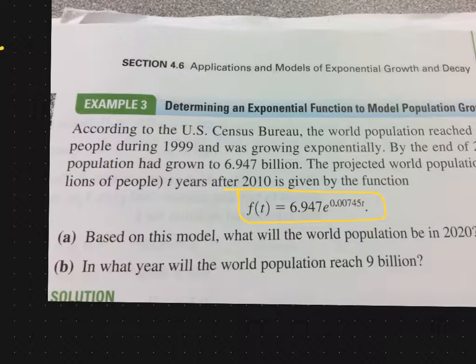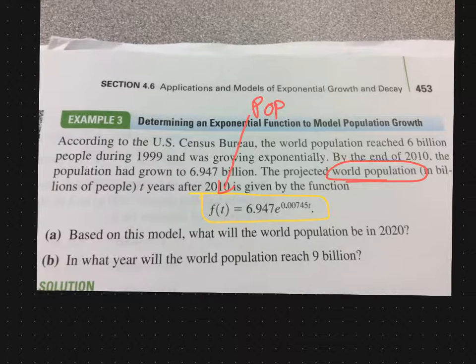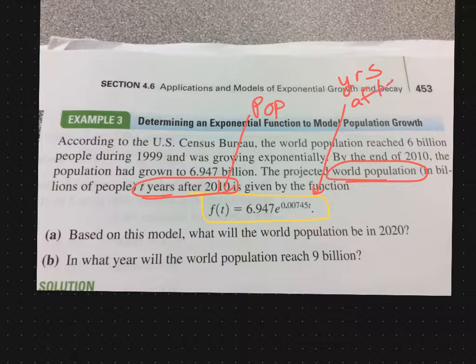Part A, based on this model, what would the world population be in 2020? Here we're given a formula, and I've tried to encourage you this semester that whenever you're given a formula, to label the variables. So we have a reading problem. What is this function giving us? It's the world population in billions. This f(t) is the population in billions of people, and t is the number of years after 2010. In 2011, t would be 1, and in 2012, t would be 2, so on and so forth.